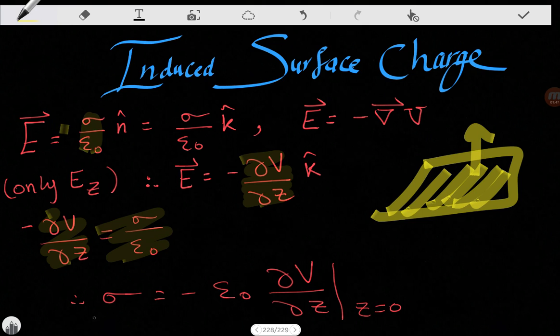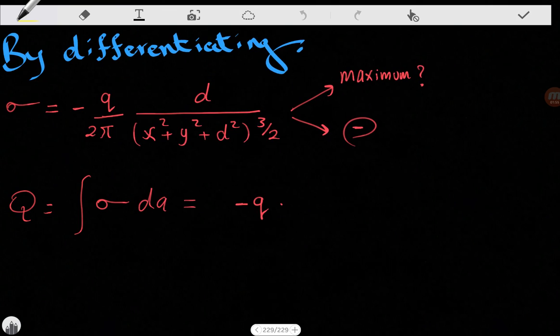We want to calculate the charge density when z is equal to zero at the conducting plate. Okay, by just differentiating, we can get that sigma is equal to this expression.